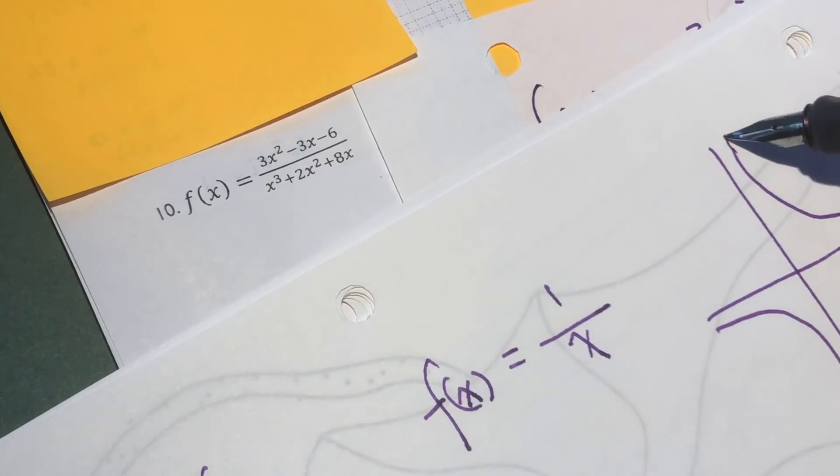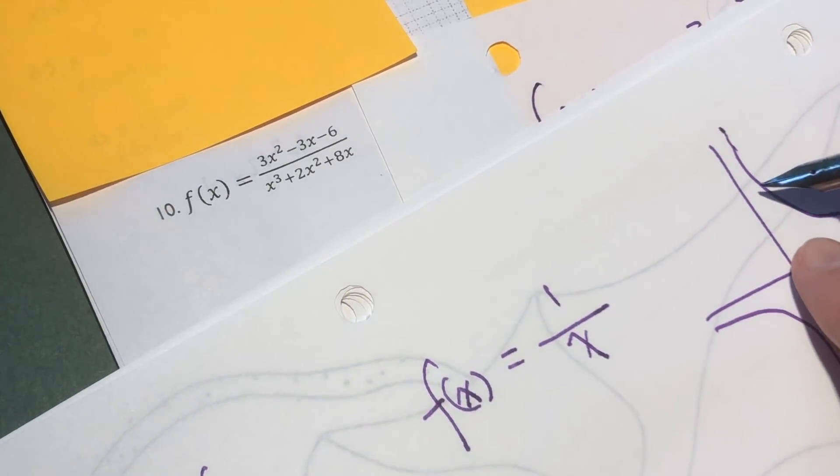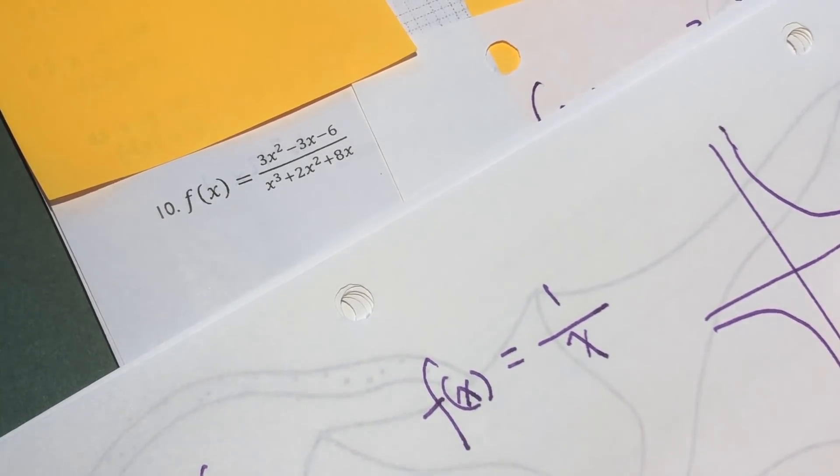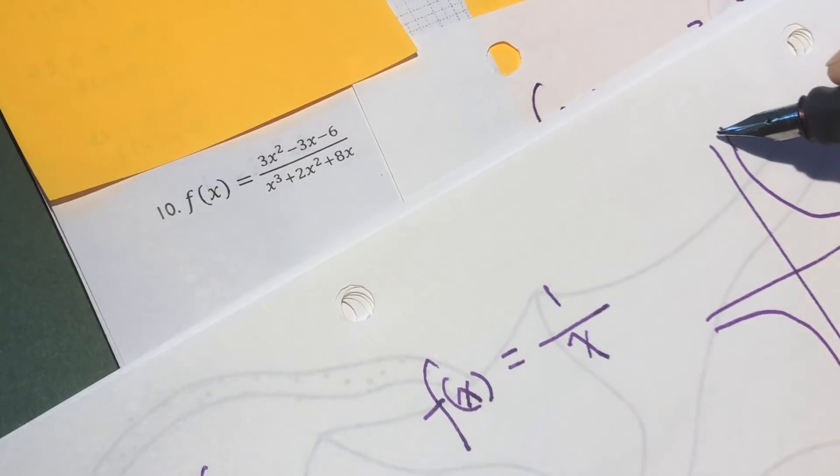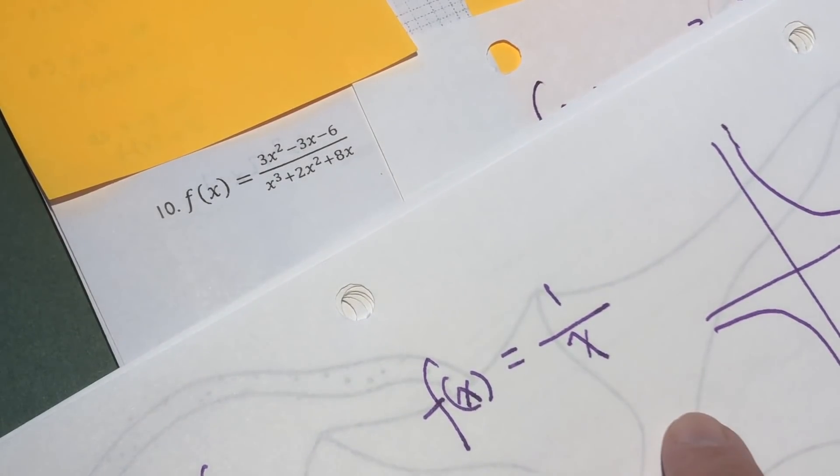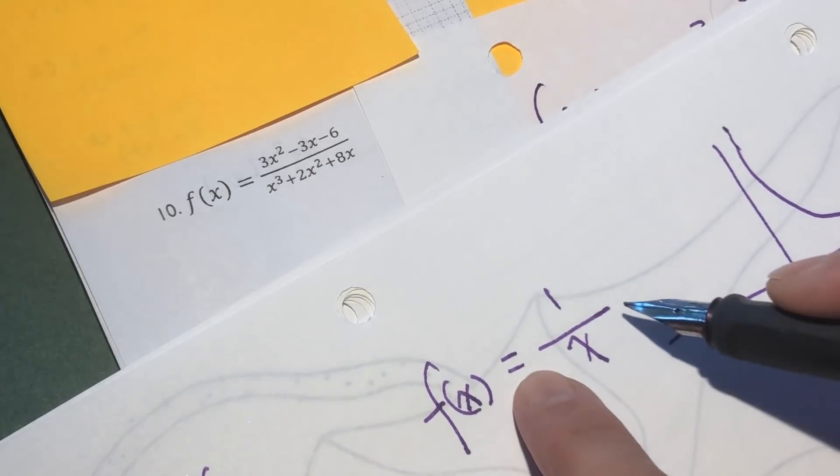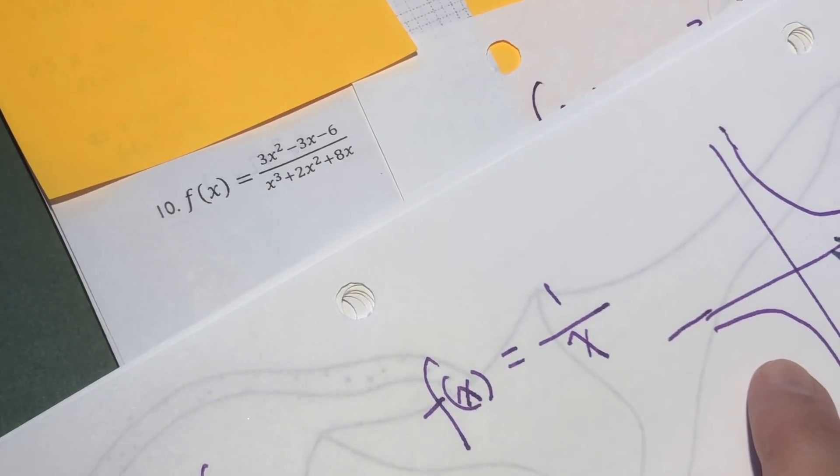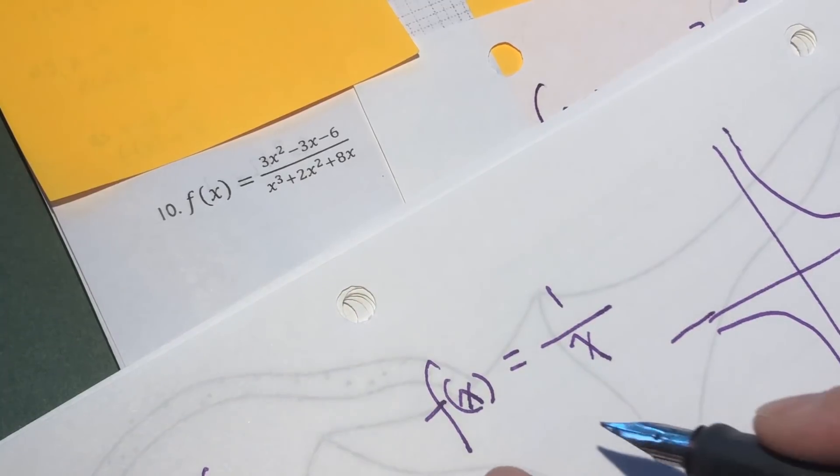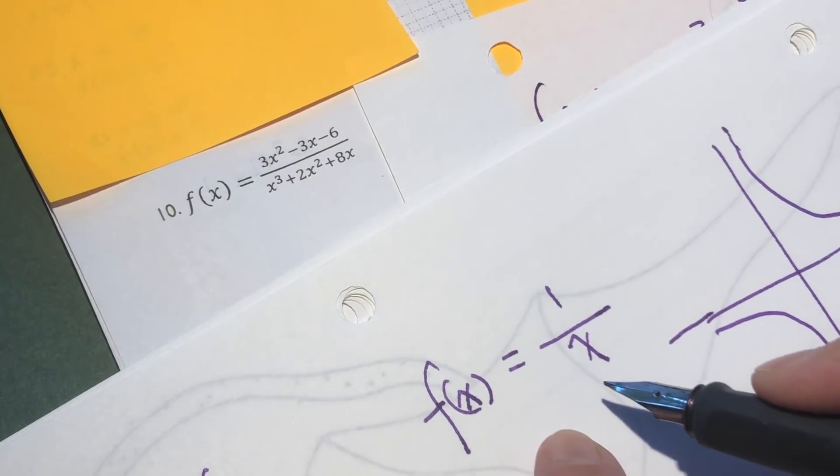When x is big, y is small. When x is small, y is big when it is positive. When it is negative, it's like this. This is the function. This is the graph of such function, 1 over x.